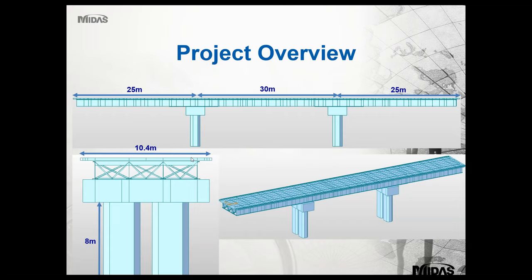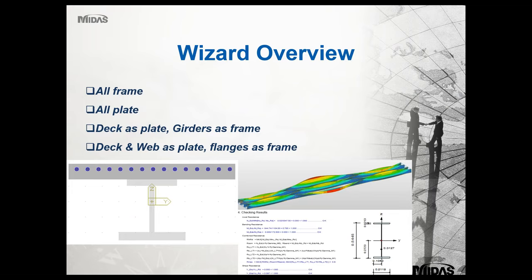This is the project I will be covering today. It's a three-span bridge — the first and last spans are 25 meters and the mid-span is 30. The deck width is 10.4 meters and the piers are 8 meters high. Our wizard covers further modeling types established by the industry: all frame, all plate, deck as plate with girders as frame, and deck and web as plate with flanges as frame.